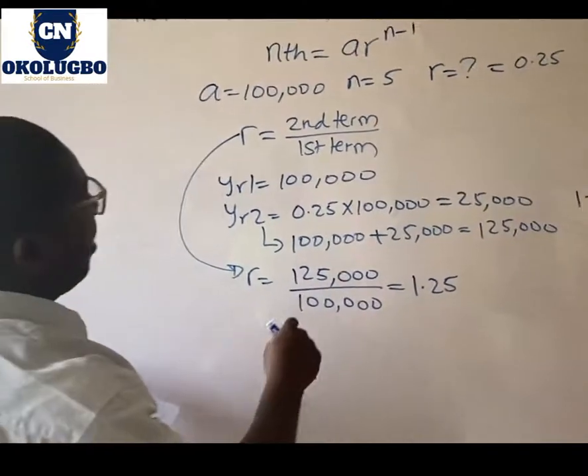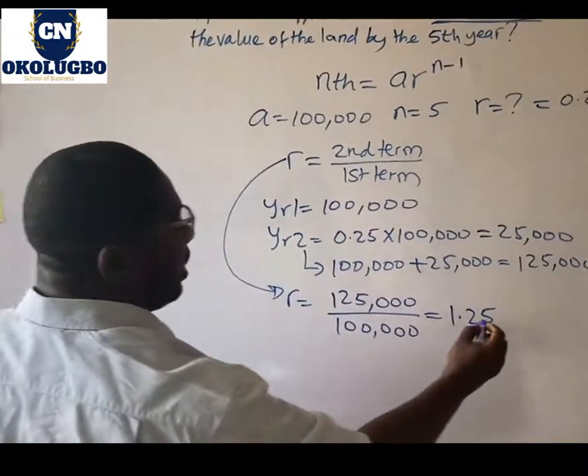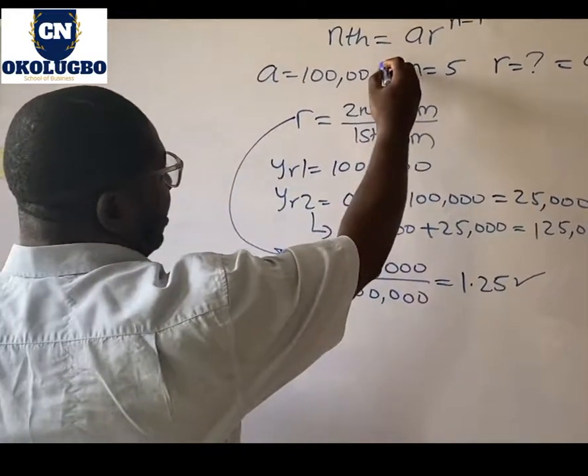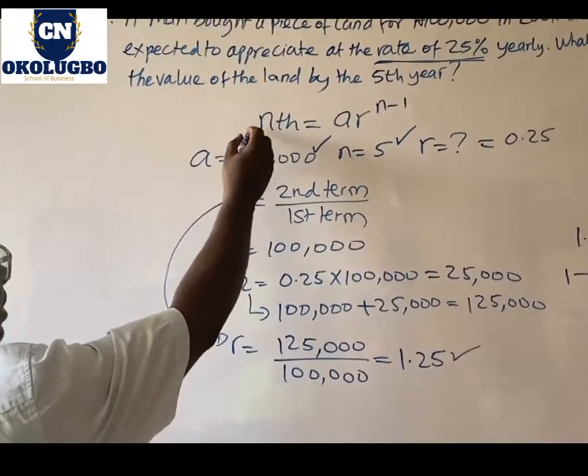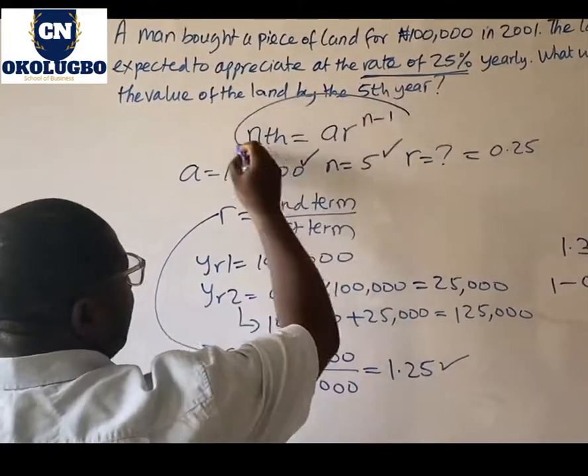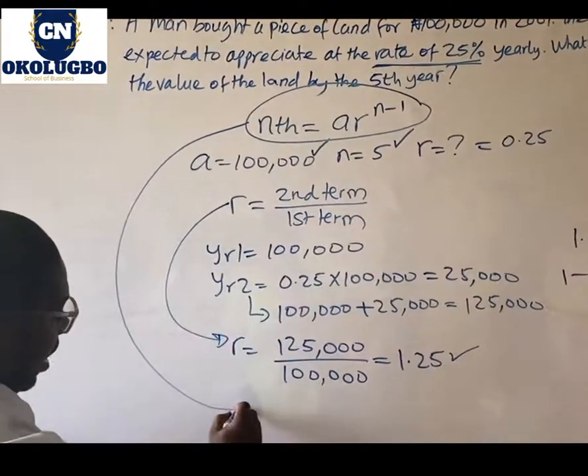So let's look at what we have. Now we have established that this is R, we have now known that this is A and this is the value of n. So let's now solve this question.